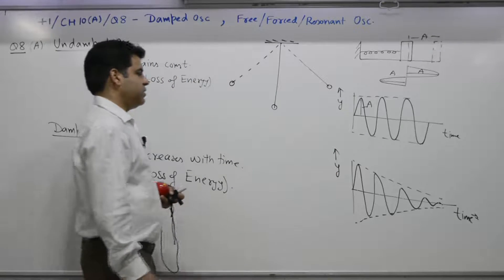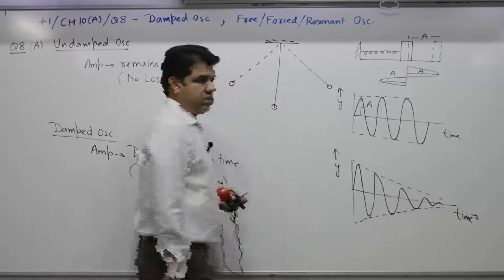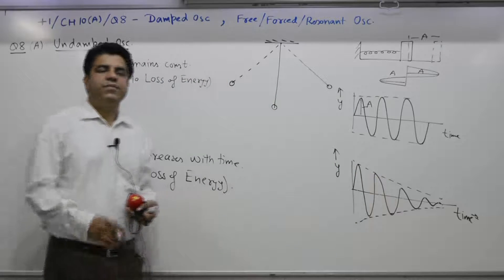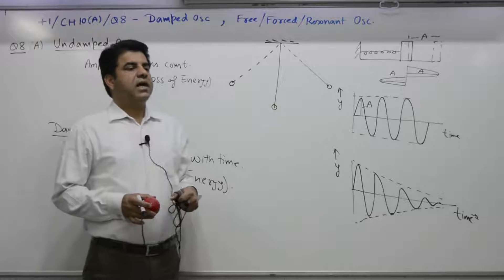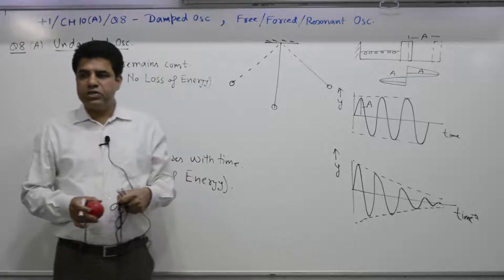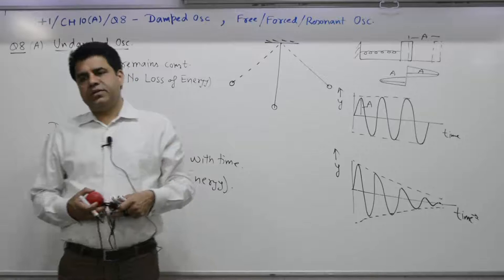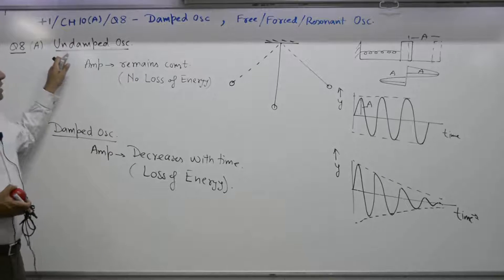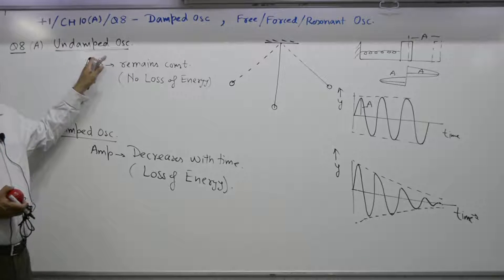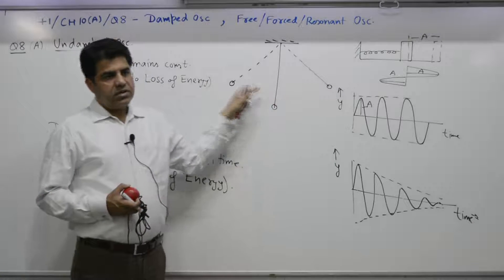For computational purposes, the question is: how does the amplitude decrease? Amplitude decreases exponentially. To summarize: undamped oscillation is the oscillation in which the amplitude remains constant.